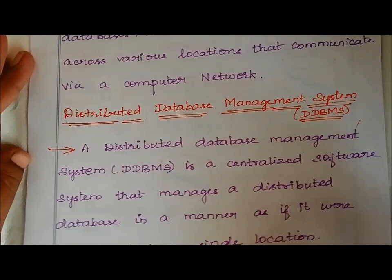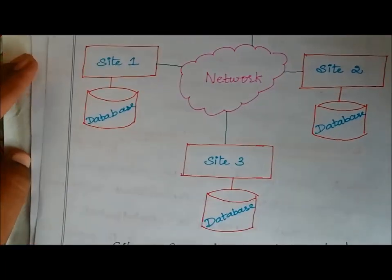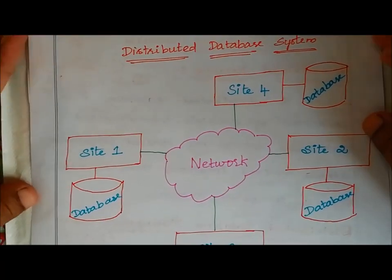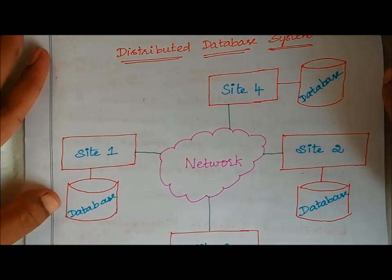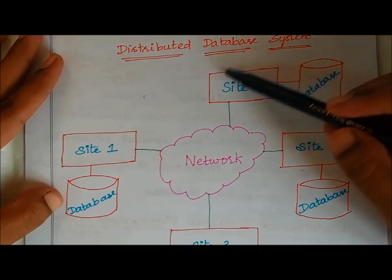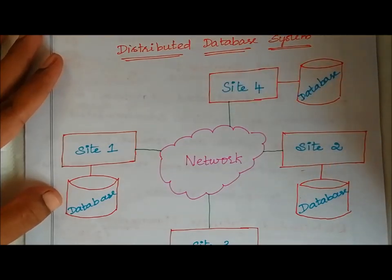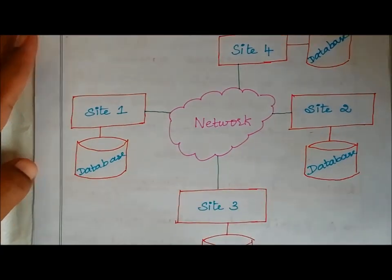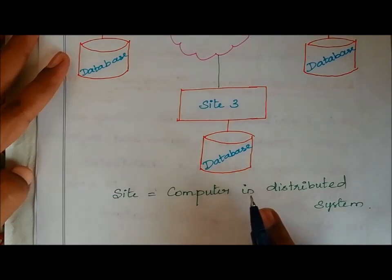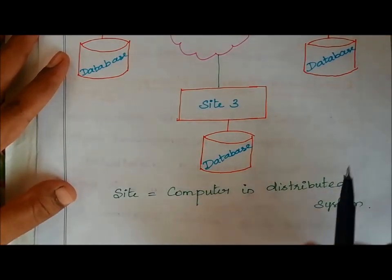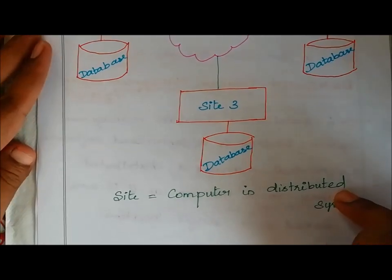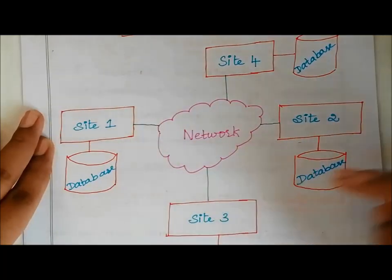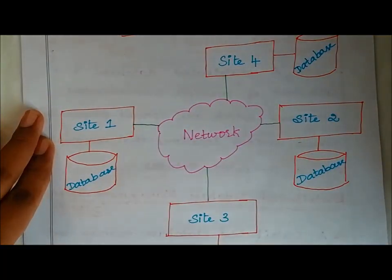Let's see the architecture diagram of a distributed database system. Consider the sites in the system — computers in the distributed system. Site 4 connects to the database, Site 2 connects to the database, Site 1 connects to the database, and Site 3 connects to the database, and so on.